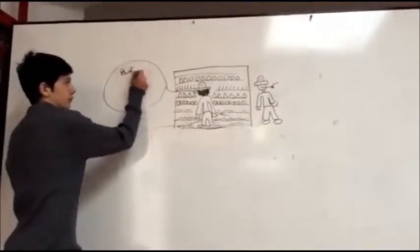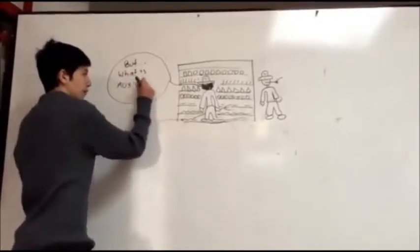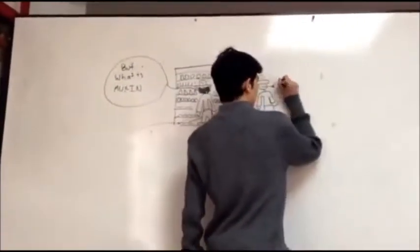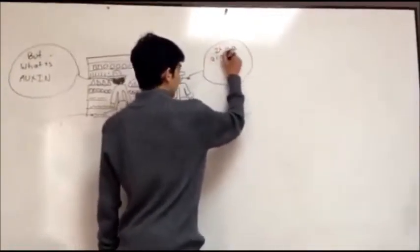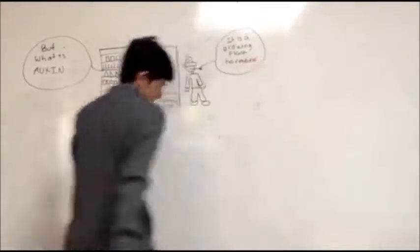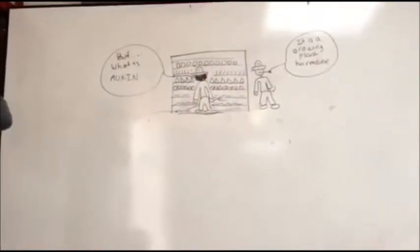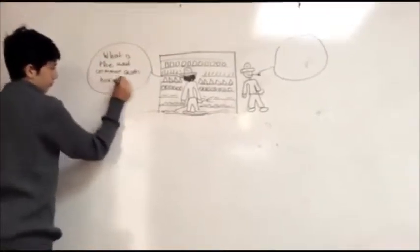Carlos didn't know what auxin was, so the plant expert explained to him carefully that it was a hormone that plants need for growth in the stem and in the root. It grows depending on the position of the sun. The plant will always grow where light is attracting them. Carlos understood and asked what is the most common auxin.